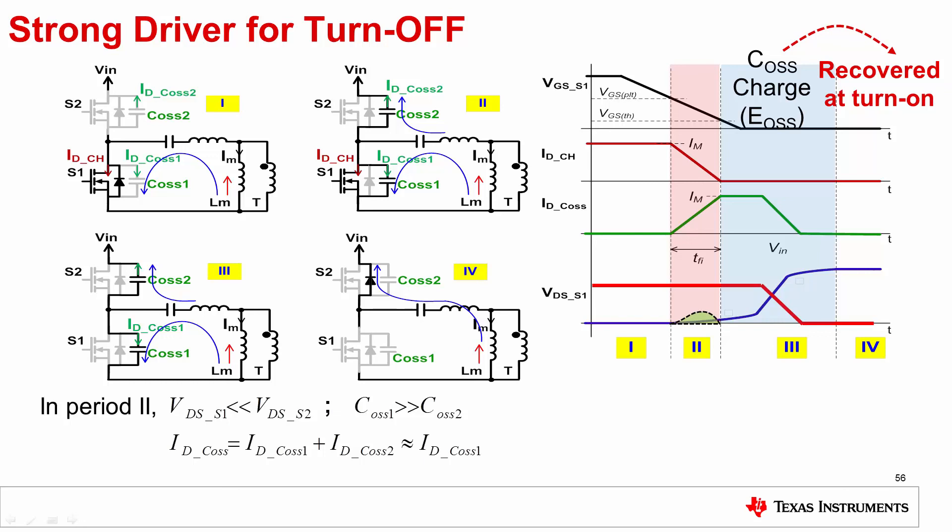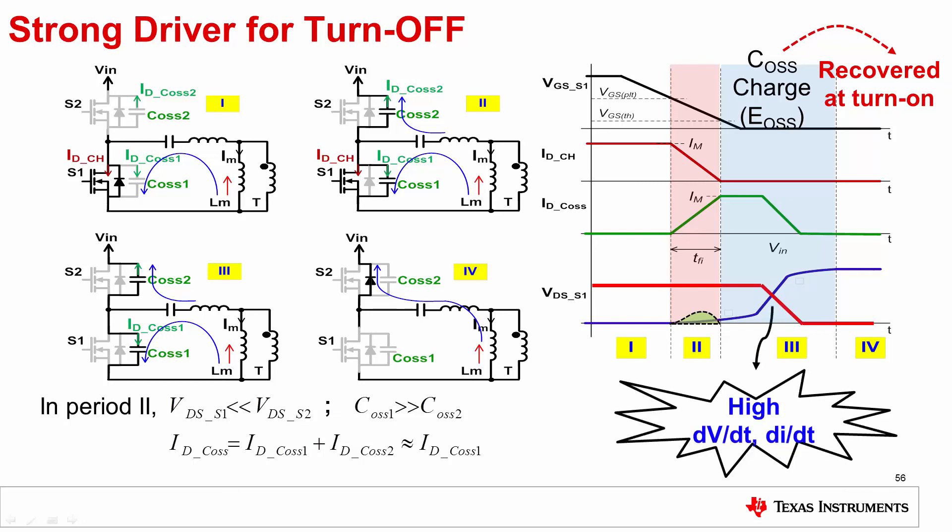It is good to have smaller turn-off loss. However, the dV/dt and dI/dt are dependent on load and can generate high dV/dt and dI/dt at very heavy load.